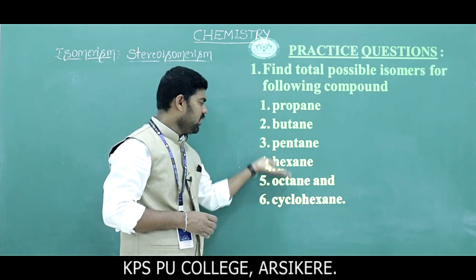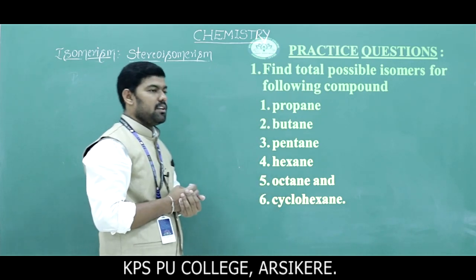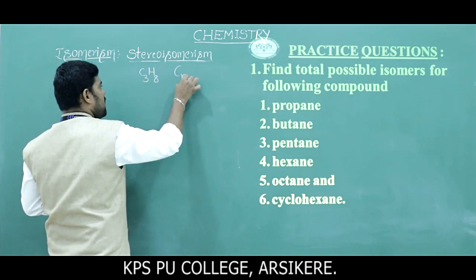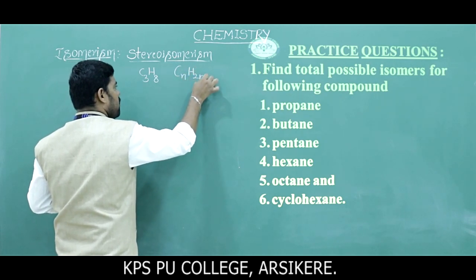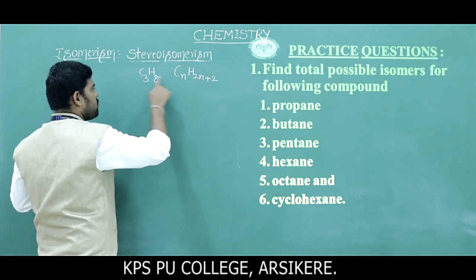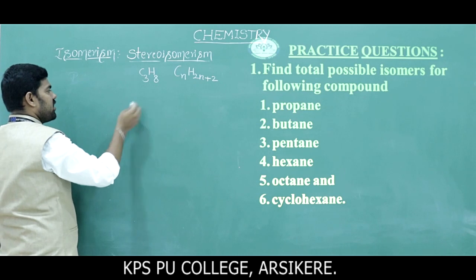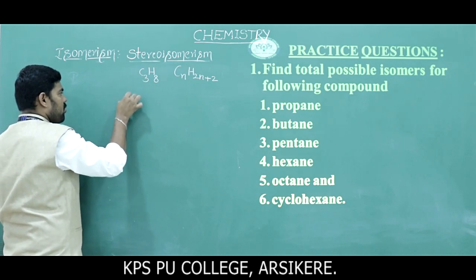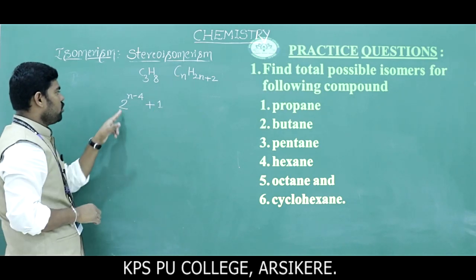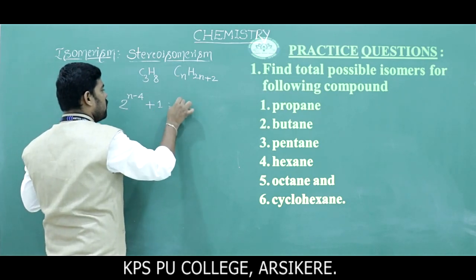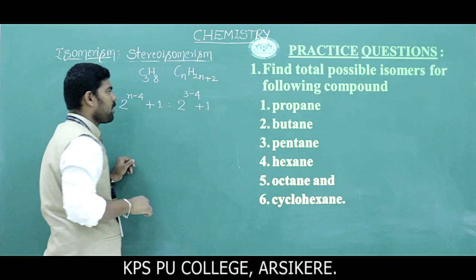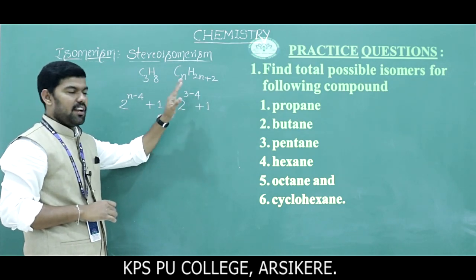For propane, the formula is C3H8, using the general formula CnH(2n+2), so 2×3+2 = 8. Applying the formula 2^(n−4)+1: for propane, n=3, so 3−4 gives a negative answer. This means propane has only one possible isomer structure: CH3−CH2−CH3.